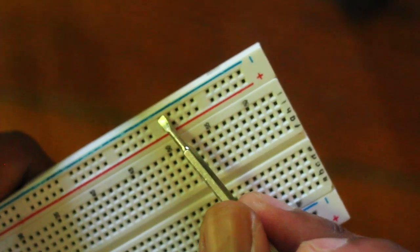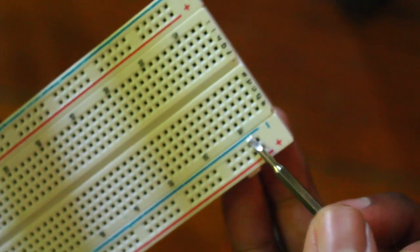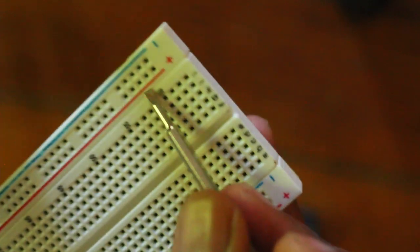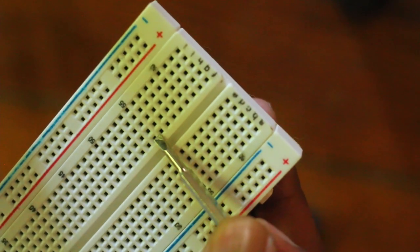There's these little slots here and metal rails that go up and down for the terminals on each side. And then these other ones now go, what is this, horizontally? Yeah, horizontally.